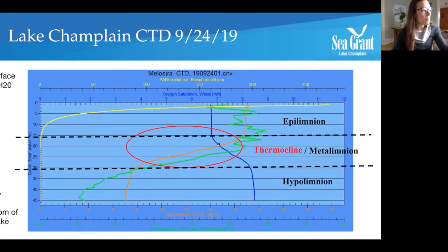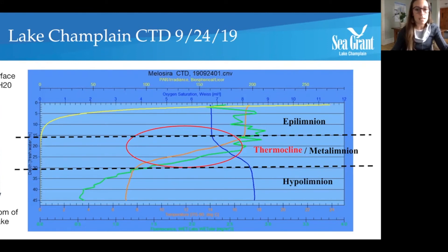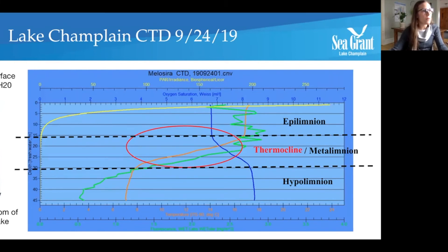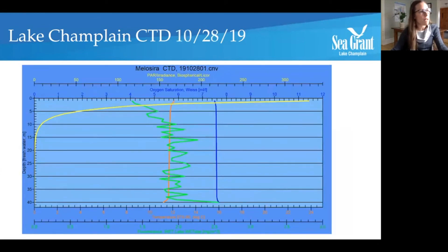What's important to know is that each of those sections actually can't really mix with each other. Usually the top section tends to be really nutrient-rich, and then the bottom section tends to be really high in dissolved oxygen, so that's where a lot of cold water fish species are going to want to live throughout the year. This graph was taken on September 24th last year.